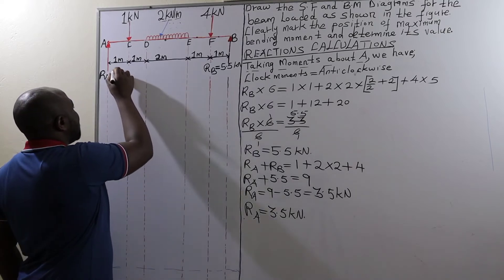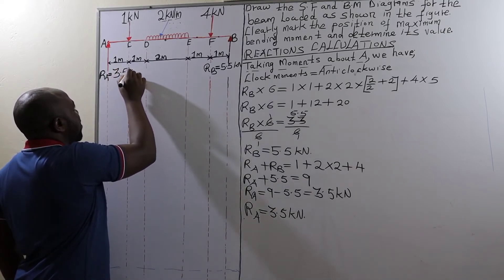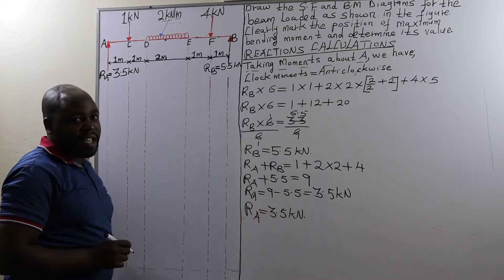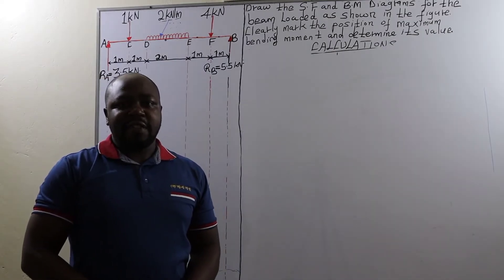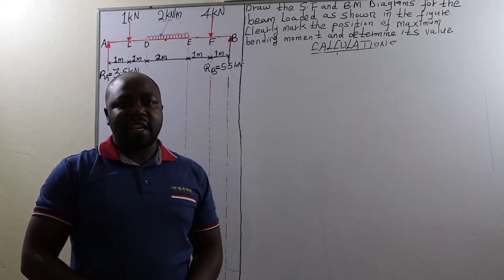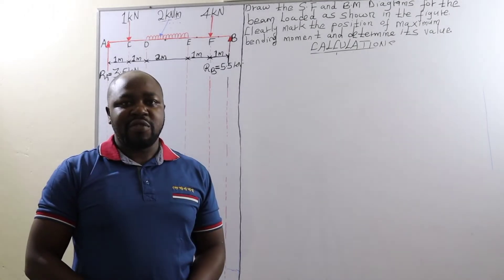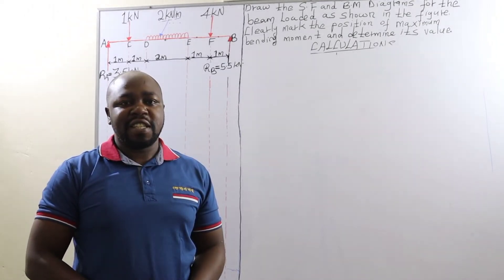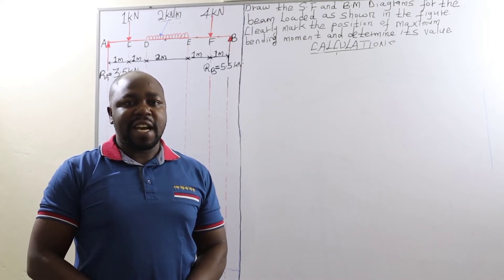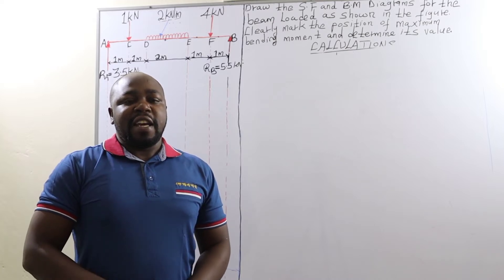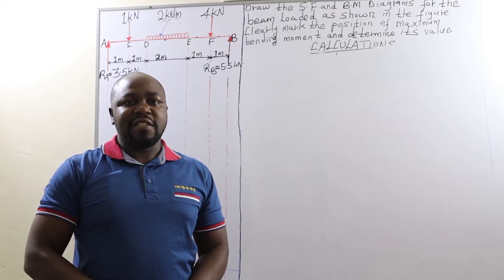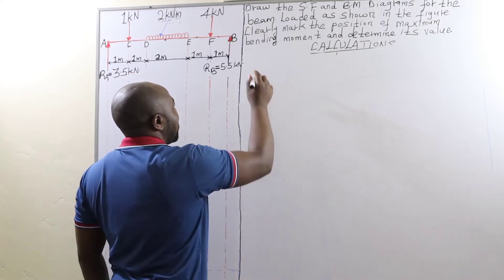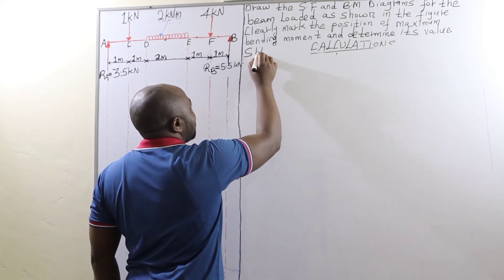Ladies and gentlemen, that is how we calculate the value of the reactions acting at point A as well as at point B. After getting the value of the reactions, the next operation will be to determine the value of shear forces at each and every section on our beam. Remember, shear force is the sum of all the forces acting on one or either side of a given section. So we are going to have shear force calculations.